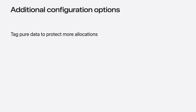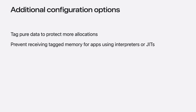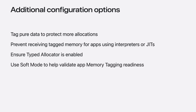There are a few additional configuration options for hardware memory tagging. The memory tag pure data option extends protection to a wider set of allocations. If your app uses an interpreter or just-in-time compiler, then enable Prevent Receiving Tagged Memory. Ensure that the Enhanced Security Type Allocator is enabled — it provides strong benefits against exploitation of use-after-free bugs and can be combined with memory tagging for the best protection. Finally, there is the soft mode option that is used to validate your app's readiness for memory tagging.